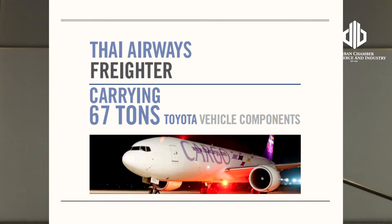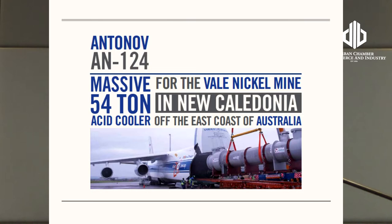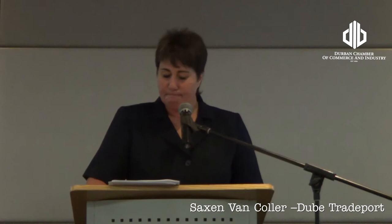A notable achievement was airlifting automotive parts to the Japanese market after the earthquake two years ago using a large freighter aircraft. Most recently, on 22 April, the Antonov AN-124 — the world's largest production cargo aircraft with a payload of 90 tonnes — landed at King Shaka Airport. We loaded a 54-tonne acid cooler at a very quick turnaround time, destined for Australia, demonstrating our ability to handle diverse and large cargo securely and swiftly.